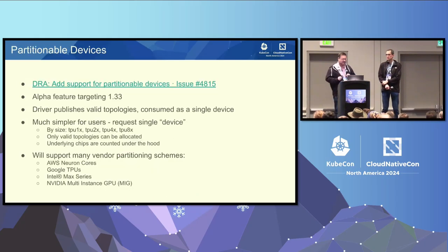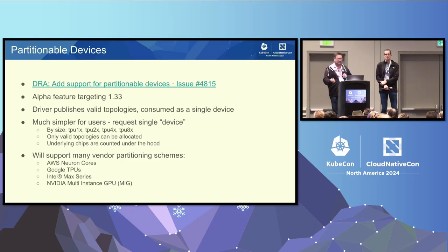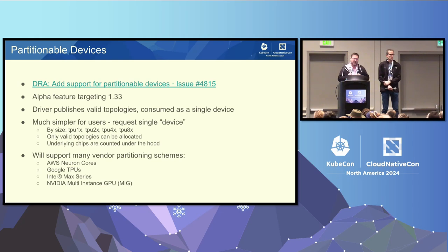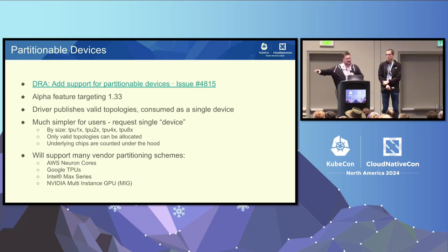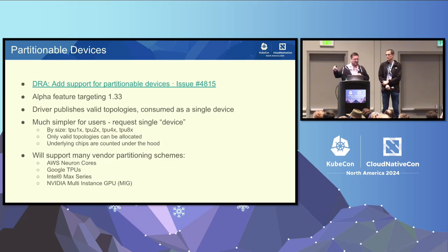Here's another alpha proposal we have, hoping to get it into 1.33. It effectively moves all the complexity about TPU partitioning and which topologies are valid onto the device model and the vendor's driver. From the user's point of view, you can just say: I want a two-chip TPU, or I want a four-chip TPU, or I want an NVIDIA MIG partition of this profile. All the magic happens behind the scenes — the user doesn't have to understand alignment at all. We even believe it's possible to extend this to the cross-vendor case, building a driver that looks across other drivers and allocates a NIC and a GPU as a unit.